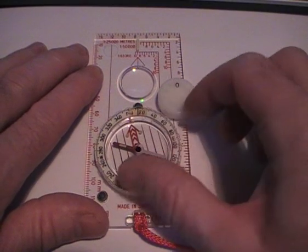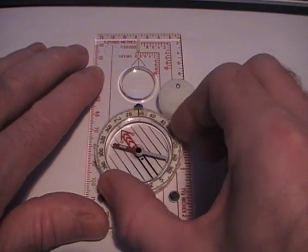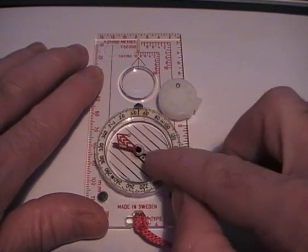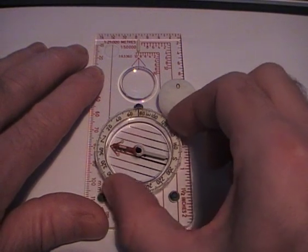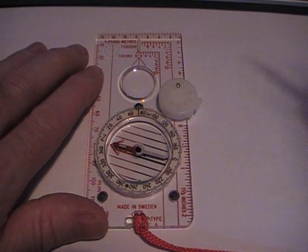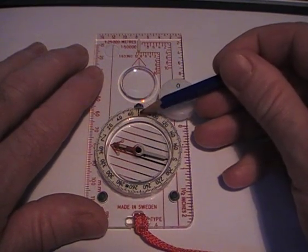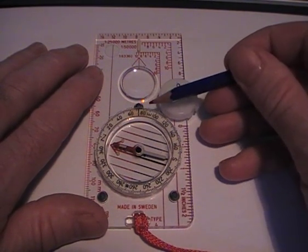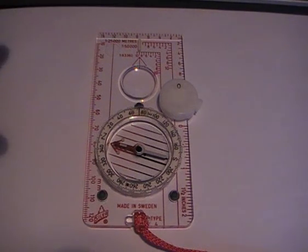inside the compass housing lines up with the magnetic needle. Once you've done that, you can read off the index line, which will give you the compass bearing. I'll give you a quick example of when you